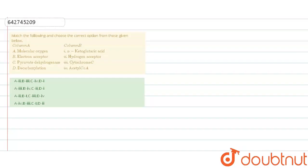The question says match the following and choose the correct option from those given below. So here we have two columns, column A and column B. We have to match the four.